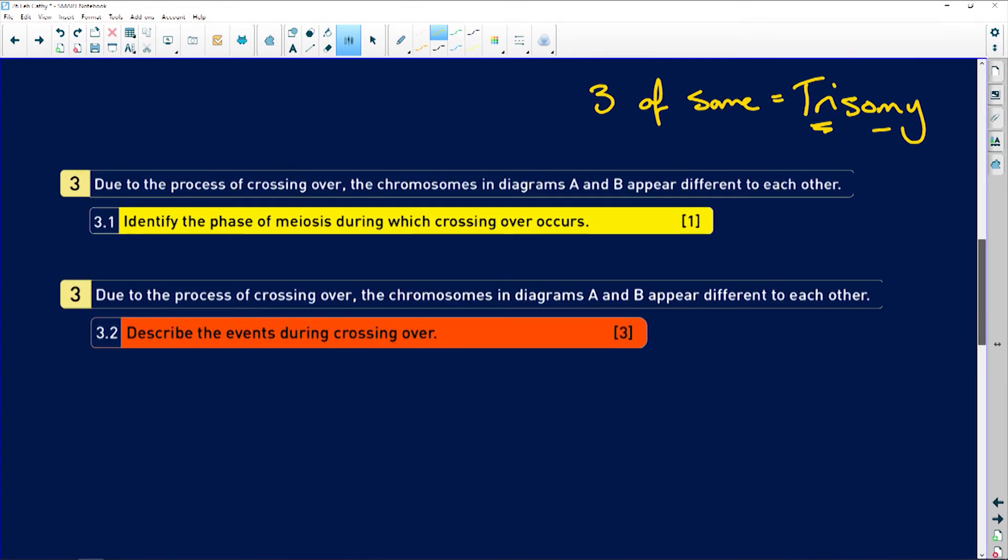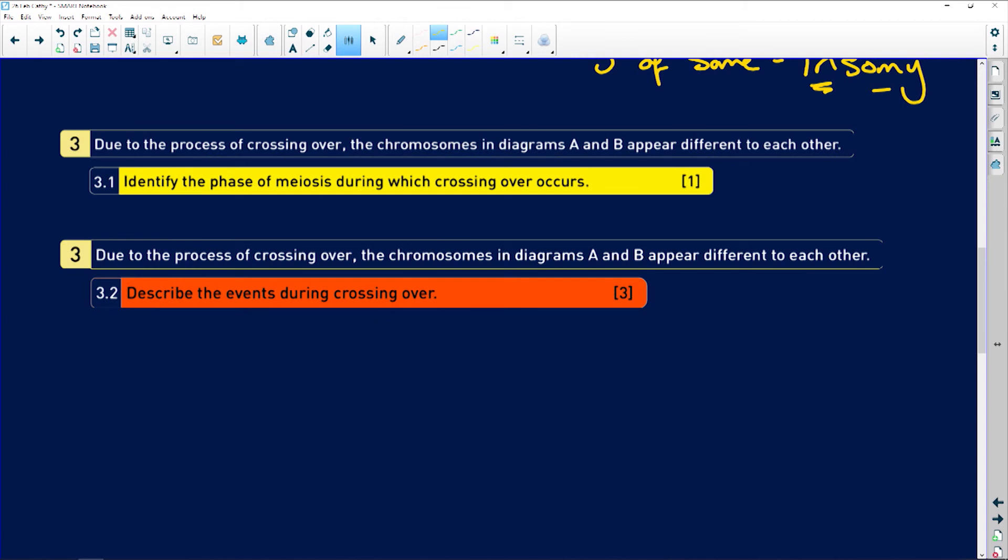Let me just quickly write that for you so you see it. When there are three of the same, it's called trisomy, which refers to your chromosomes, or your chromosome number. So trisomy, three chromosomes. And it's normally, for Down syndrome child, it will be at chromosome 21.